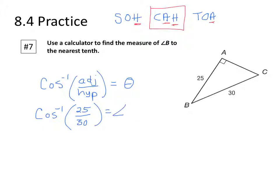And at this point we're going to use a calculator and we get—well, we were asked for the nearest tenth. So angle B is equal to 33.6 degrees.